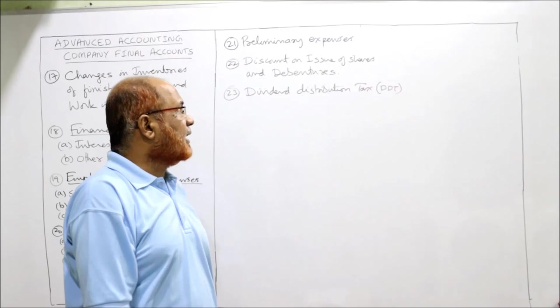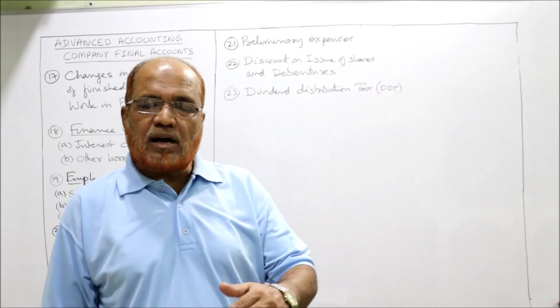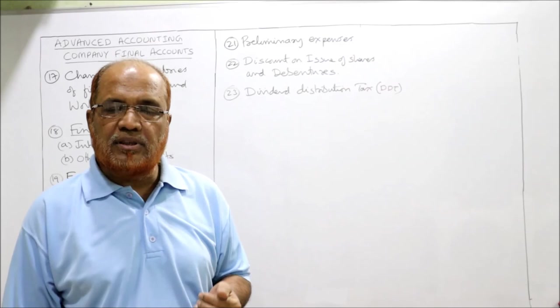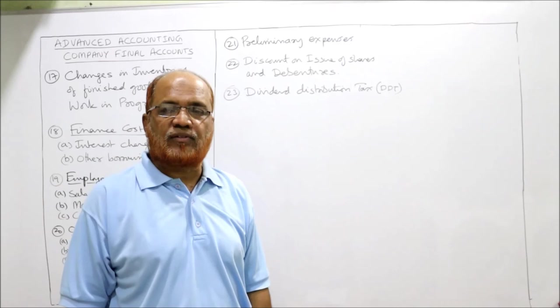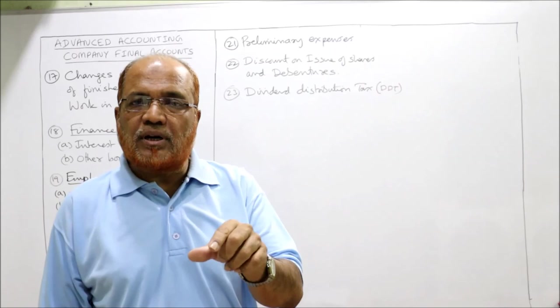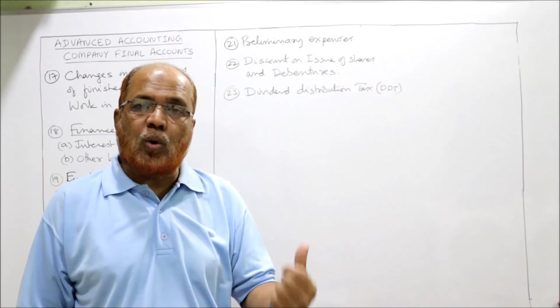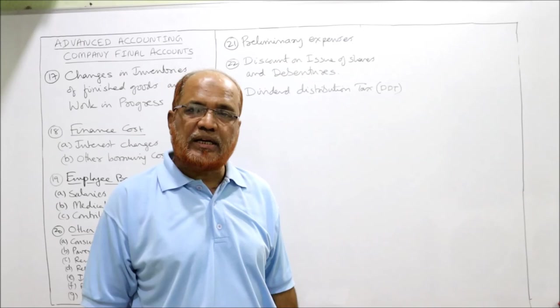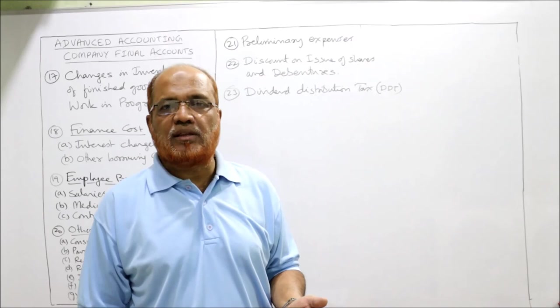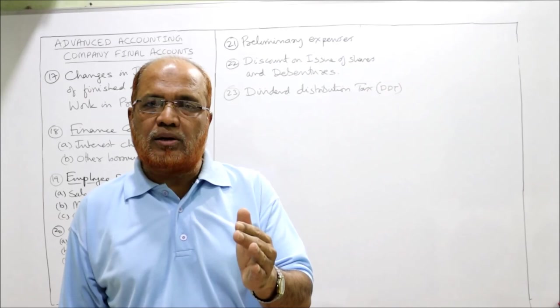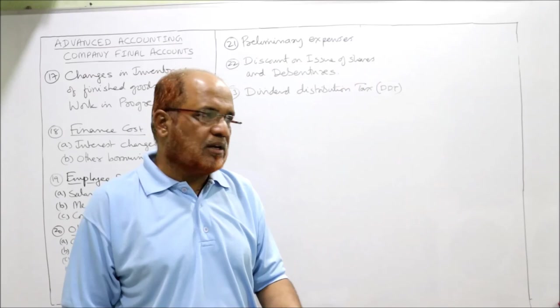Sometimes a company issues shares or debentures at a discount. This discount is a capital loss, which is written off over a period of time. Under the old Companies Act, the unamortized amount was shown under miscellaneous expenditure on the asset side of the balance sheet. Since there is no miscellaneous expenditure in the new format, instructions given in the problem should be followed. If no instructions are given, discount on issue of debentures or shares should normally be deducted from reserves under reserves and surplus.